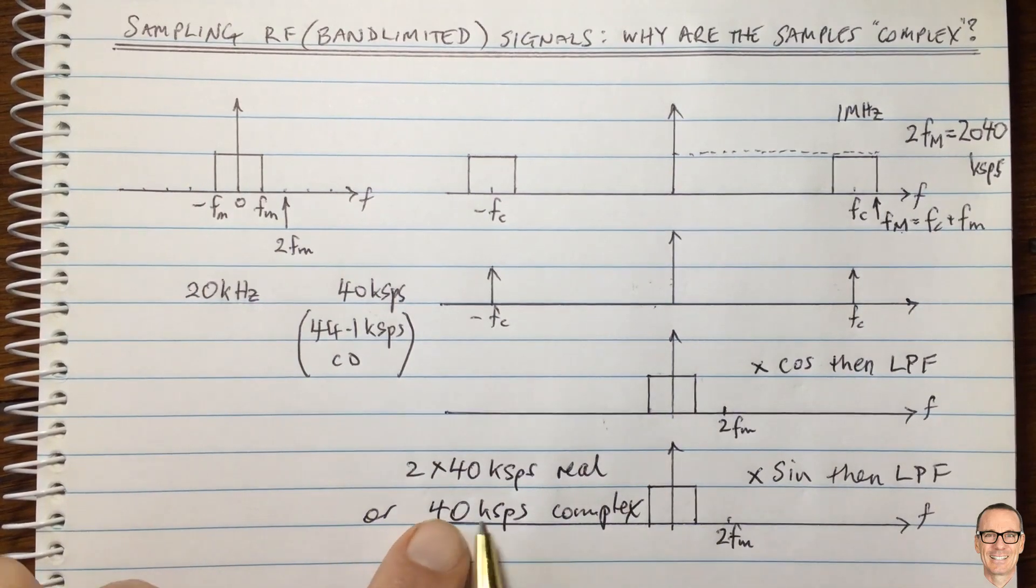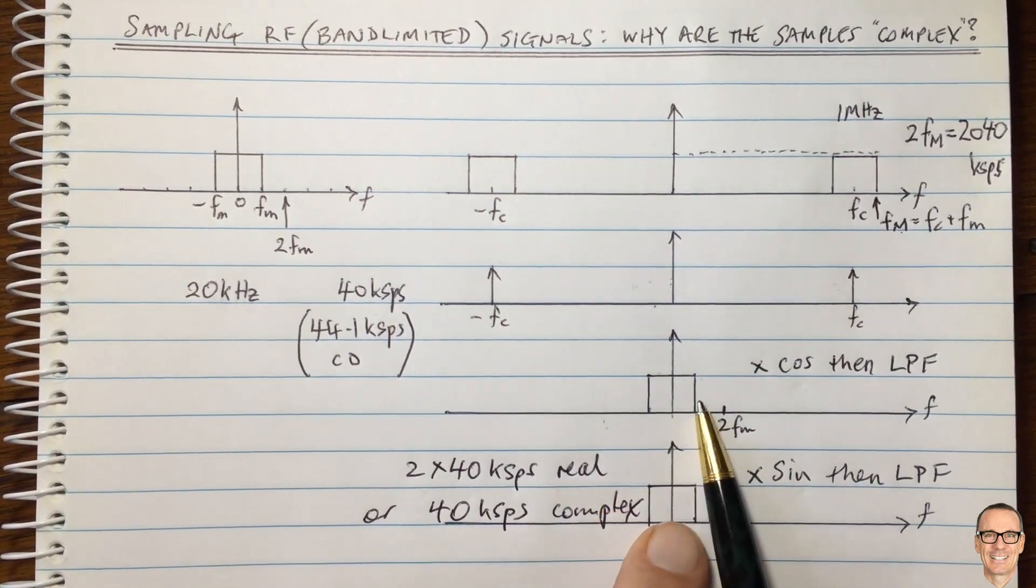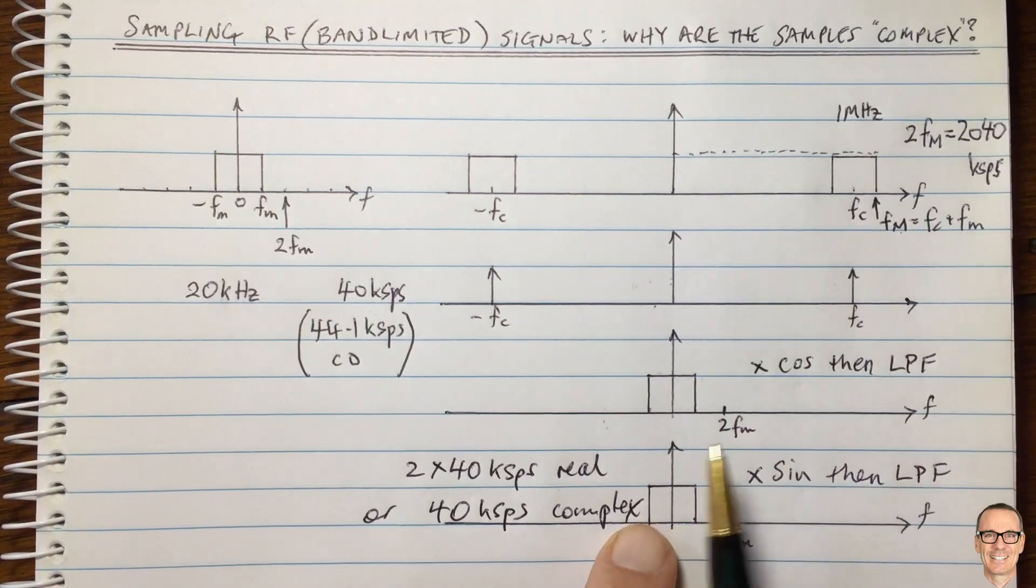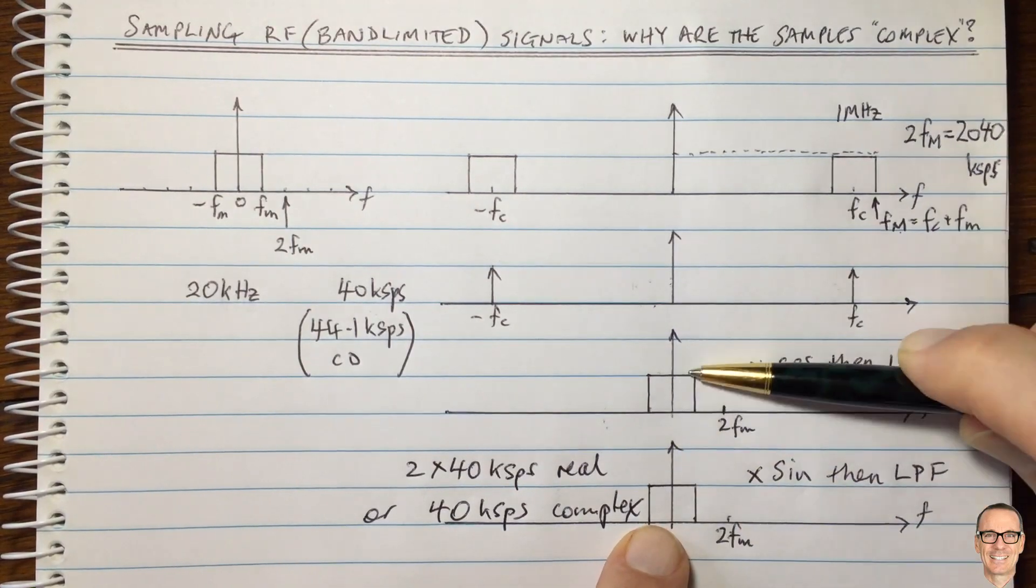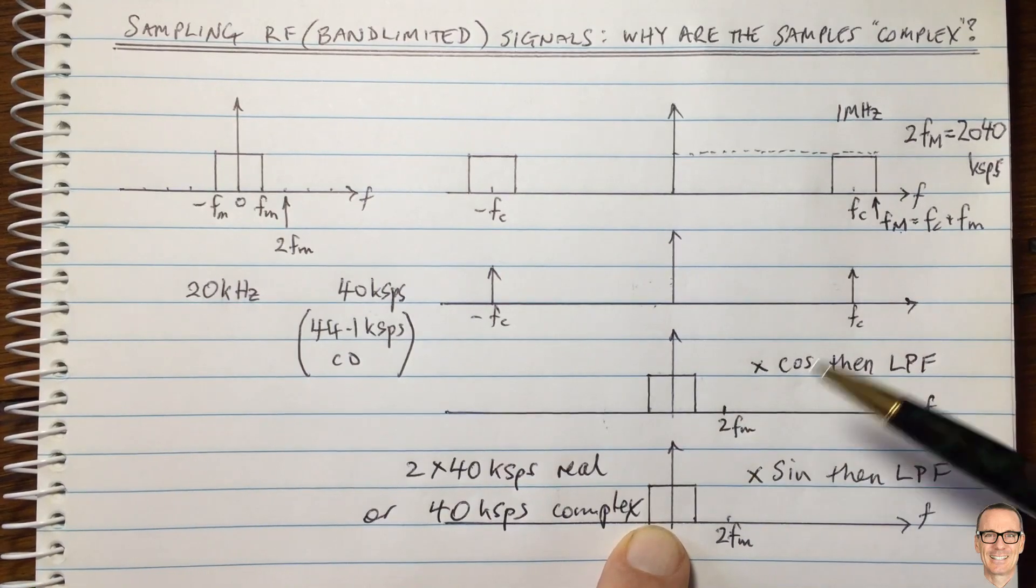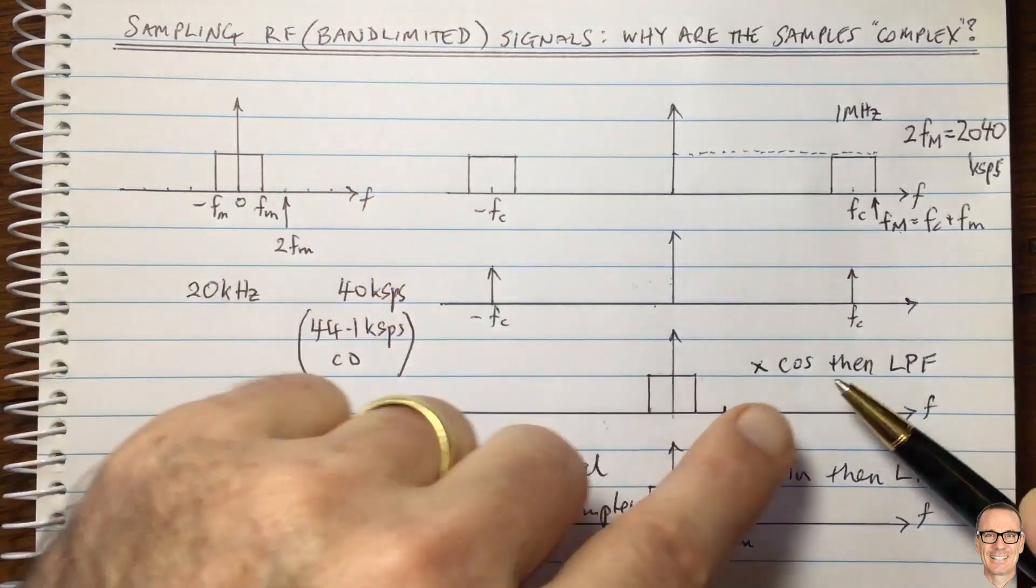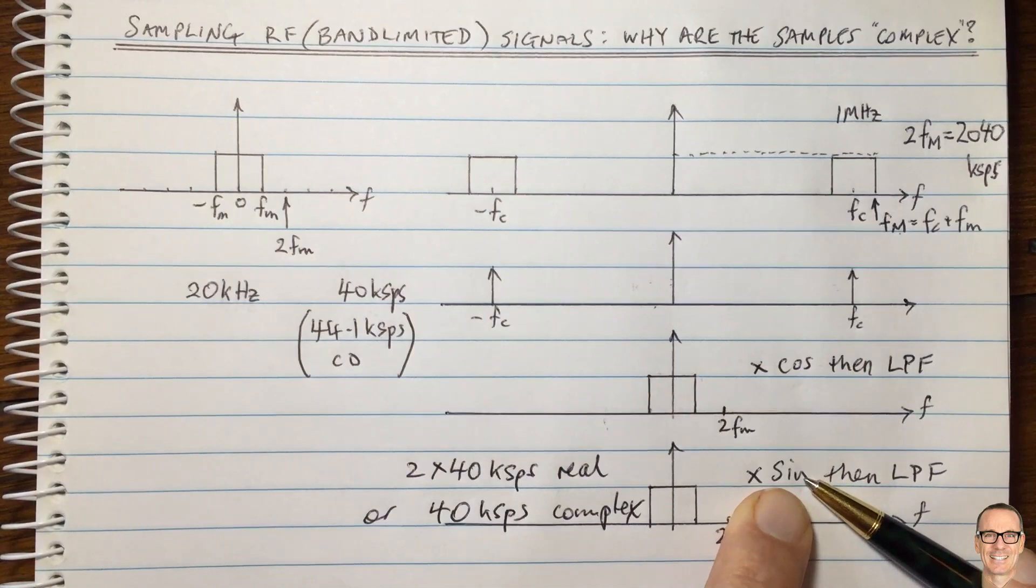Or we have 40 kilo samples per second of complex. So we can represent them that way. Because these samples of the cos and the sine are happening at the same time when we're sampling these two, because these are two separate waveforms that we have generated from doing a down conversion with a cos wave and a sine wave.